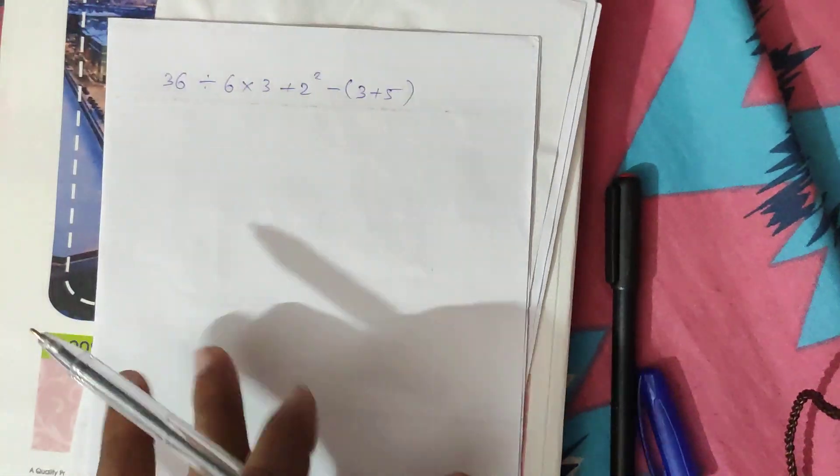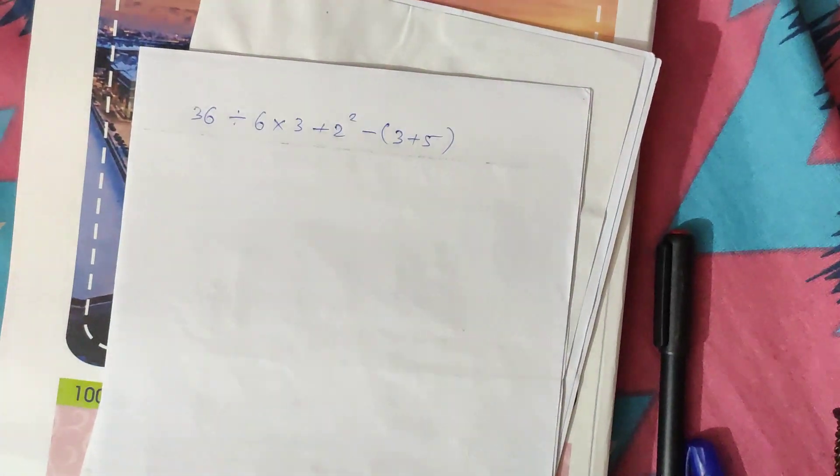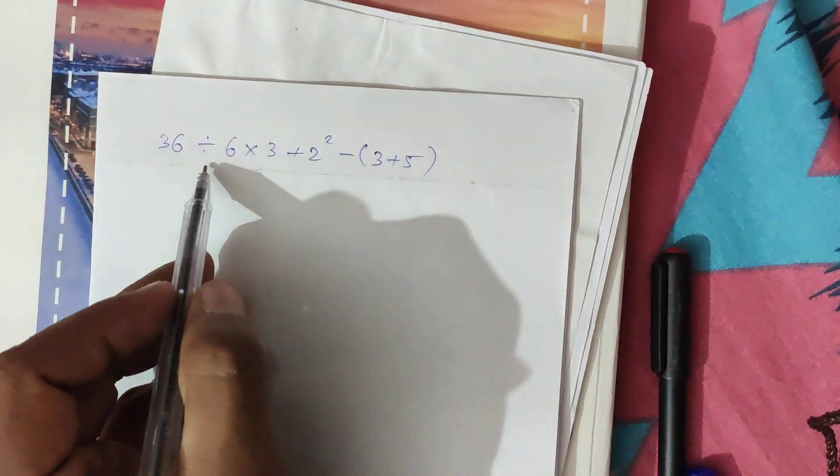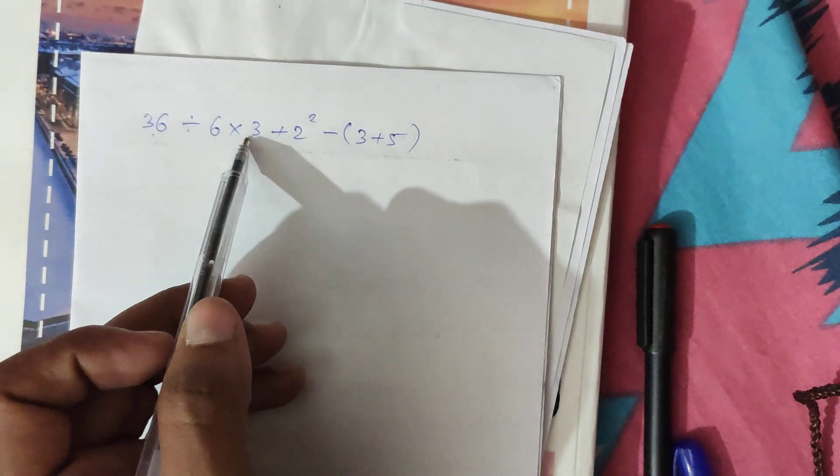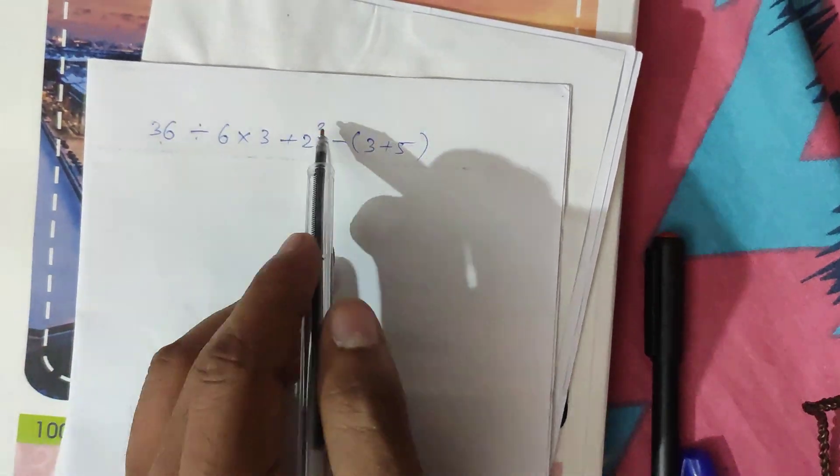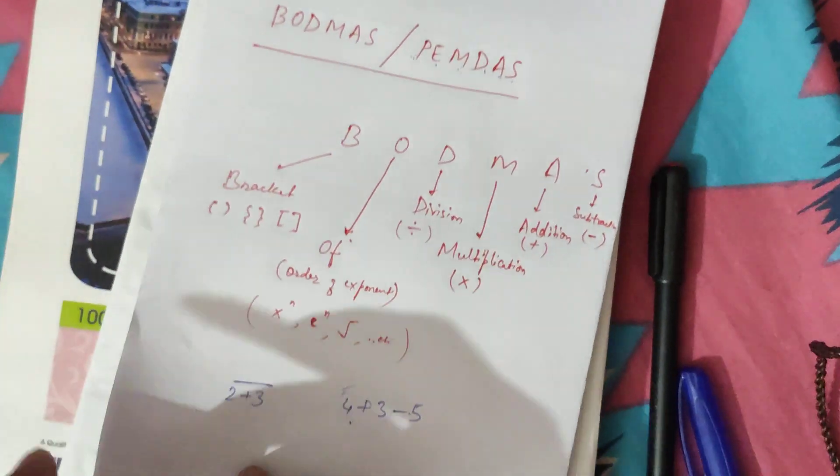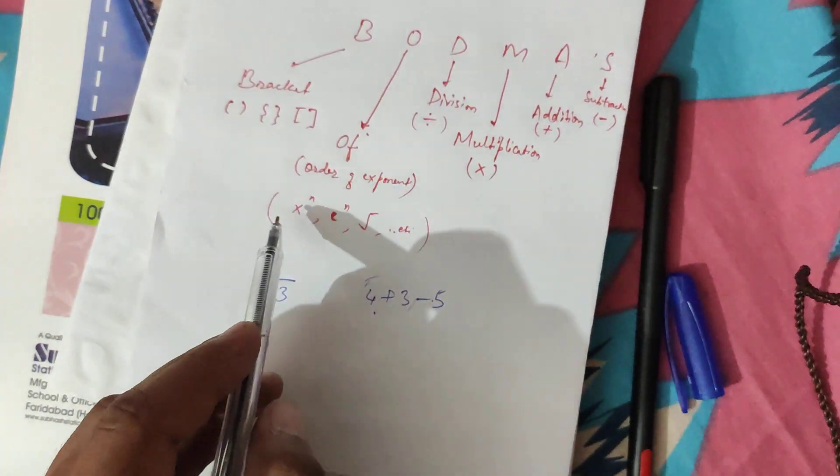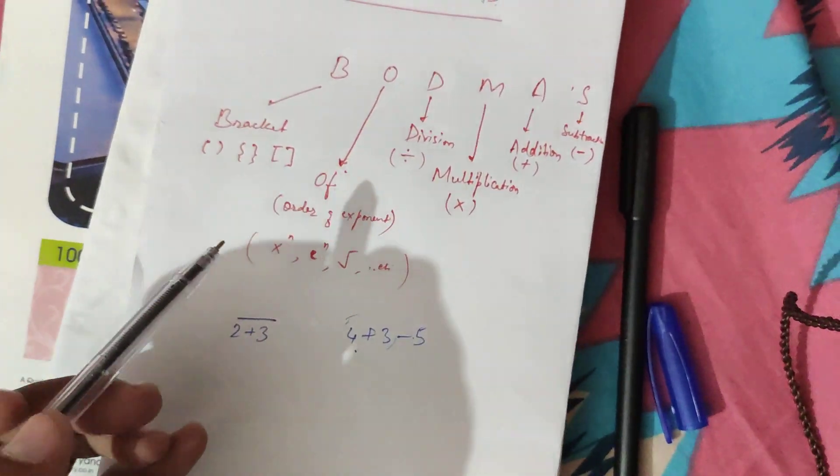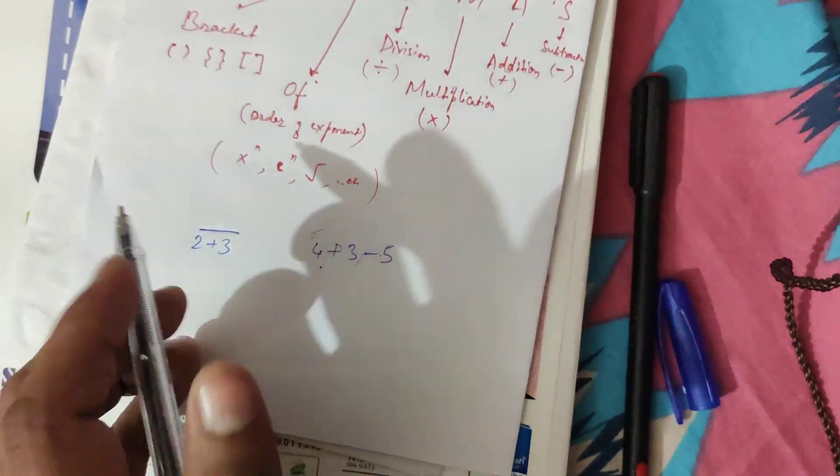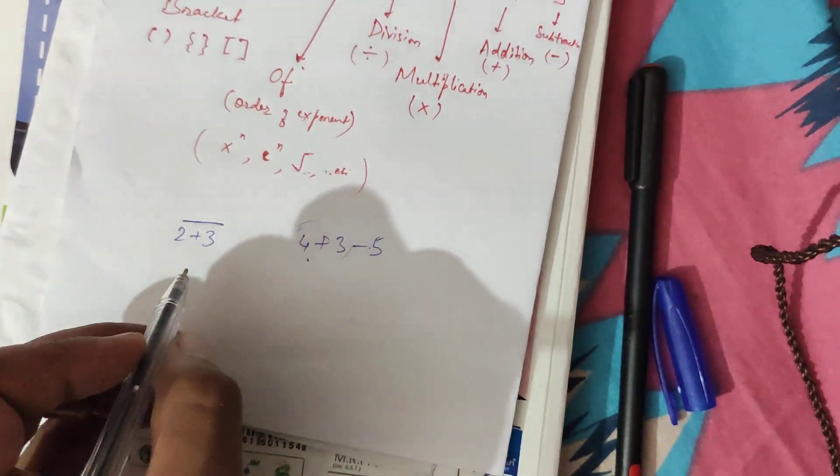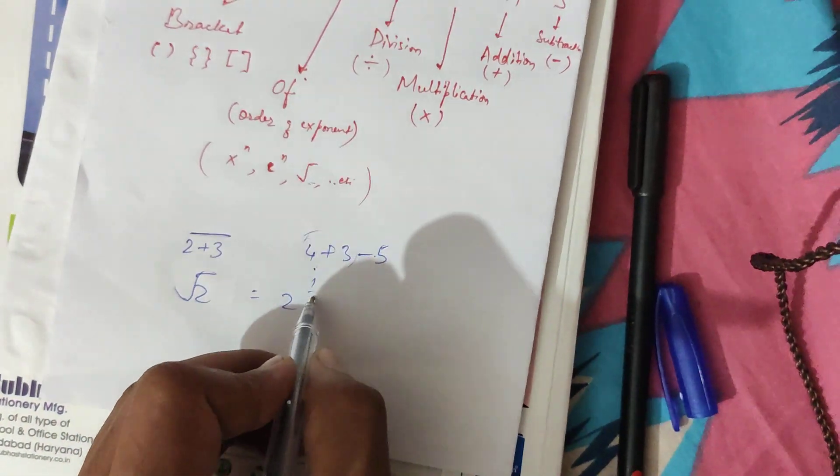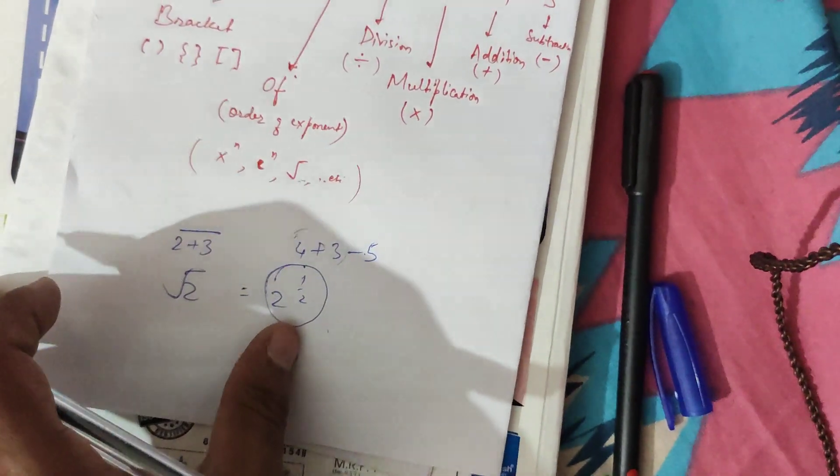First take an example. Here we have exponent, division, multiplication. This is the order of exponent which we were talking about. The order of exponent is the power. The root is also a power, power of half. If we have root 2, then it means 2 to the power half.